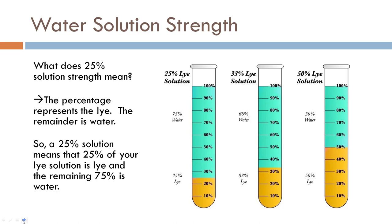So 25% solution strength means 25% is lye and the other 75% will be water. If we had a 50% solution strength, 50% would be lye and 50% would be water. When working with solution strengths, remember you cannot go any higher than 50%. Lye can dissolve in equal amounts of water, but it cannot dissolve if you have less water than lye — so the highest you can go is a 1-to-1 ratio.